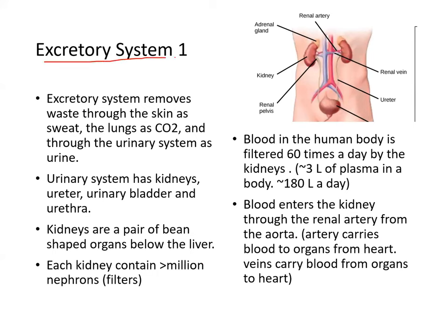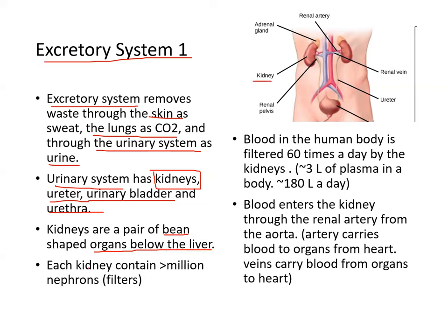The excretory system removes waste through the skin as sweat, the lungs as CO2, and through the urinary system as urine. The urinary system has the kidneys, ureter, and urinary bladder, connected by the urethra. The kidneys are a pair of bean-shaped organs right below the liver. Each kidney contains more than a million nephrons, and it's these nephrons that are the filters. The blood in the human body is filtered 60 times a day by the kidneys. There are about three liters of plasma in a human body, so the kidney is filtering 180 liters a day.